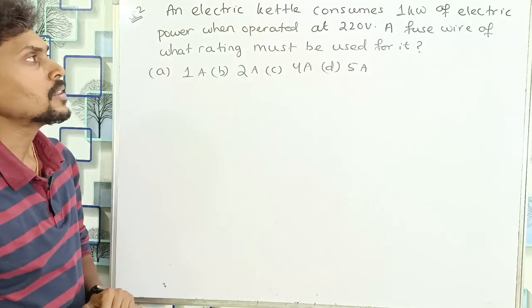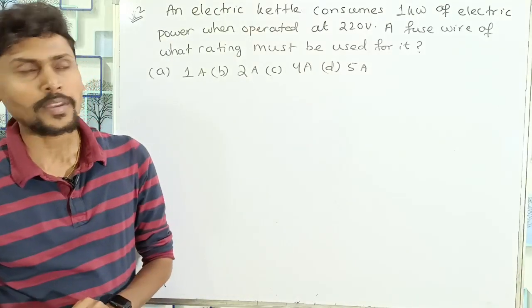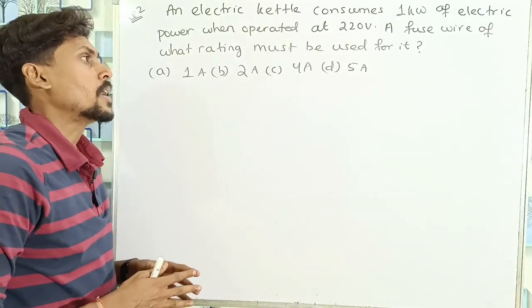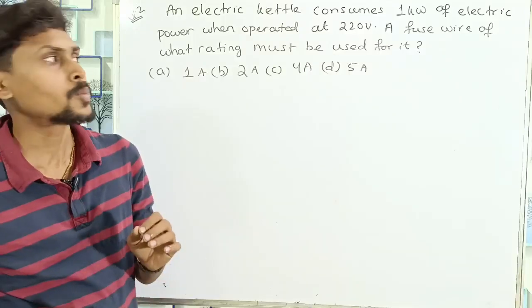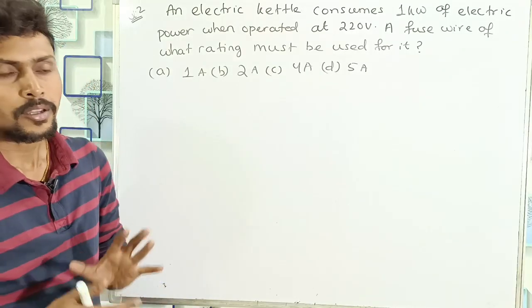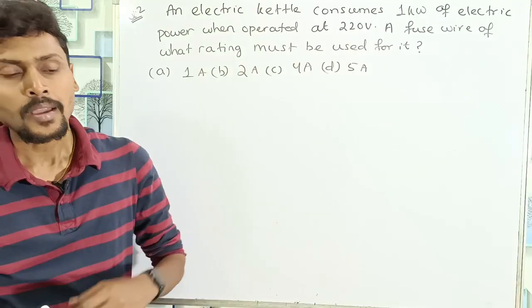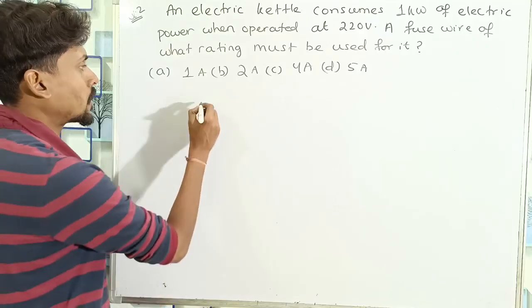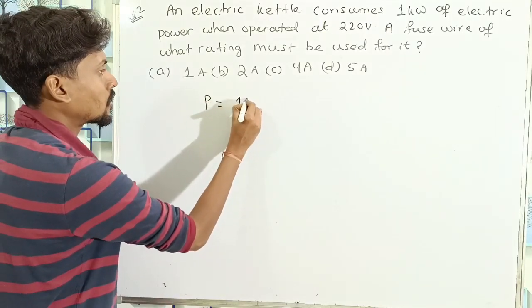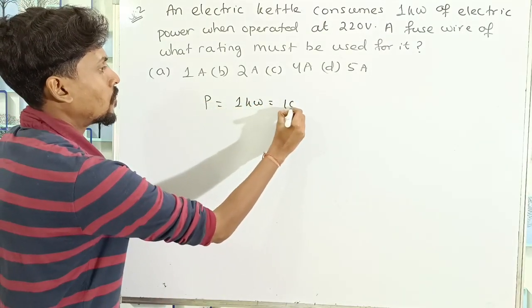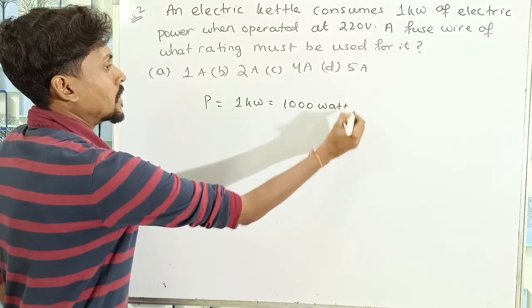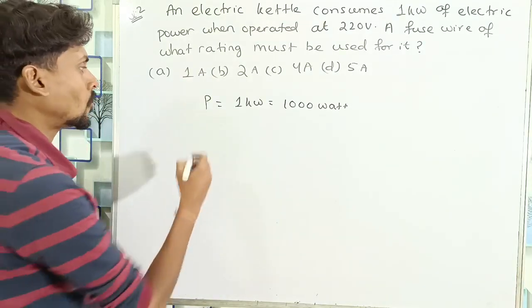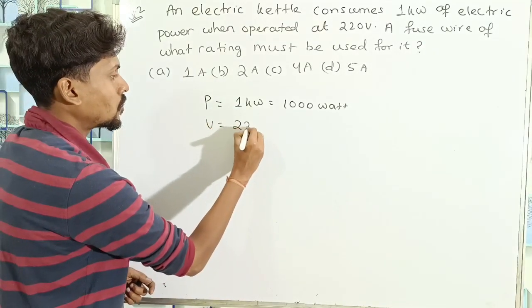Now look at the second question. An electric kettle consumes 1 kW of electric power when operated at 220V. A fuse wire of what rating must be used for it? So the kettle has a power consumption of 1 kW and the supplied voltage is 220V.